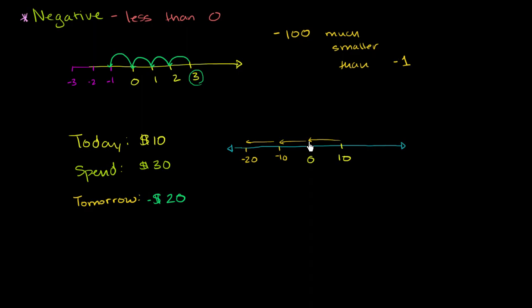So each of these distances, I spent $10, I'd be at 0. Another $10, I'd be at negative 10. Another $10, I would be at negative 20. And this whole distance right here is how much I spent. I spent $30.